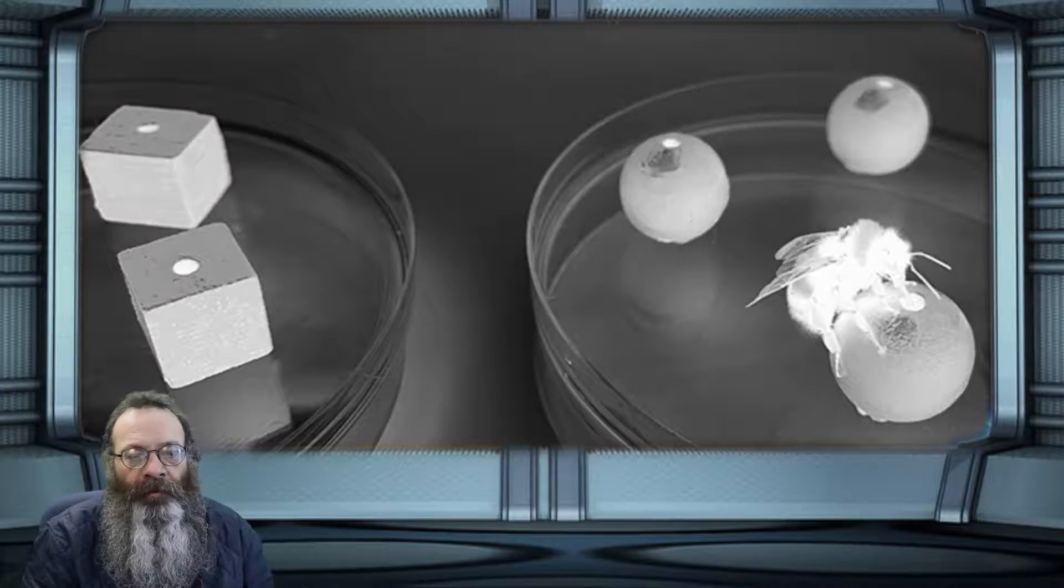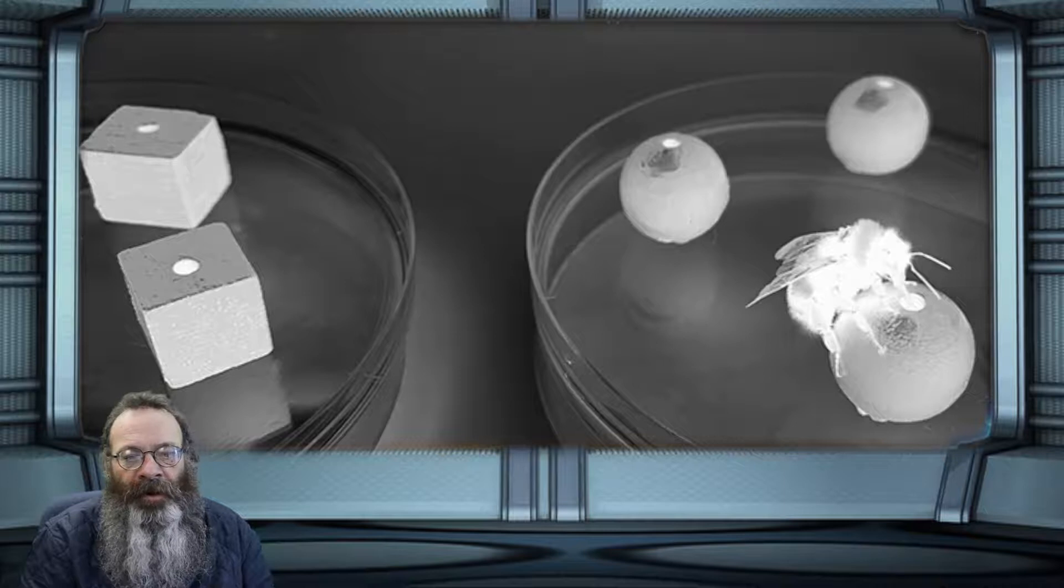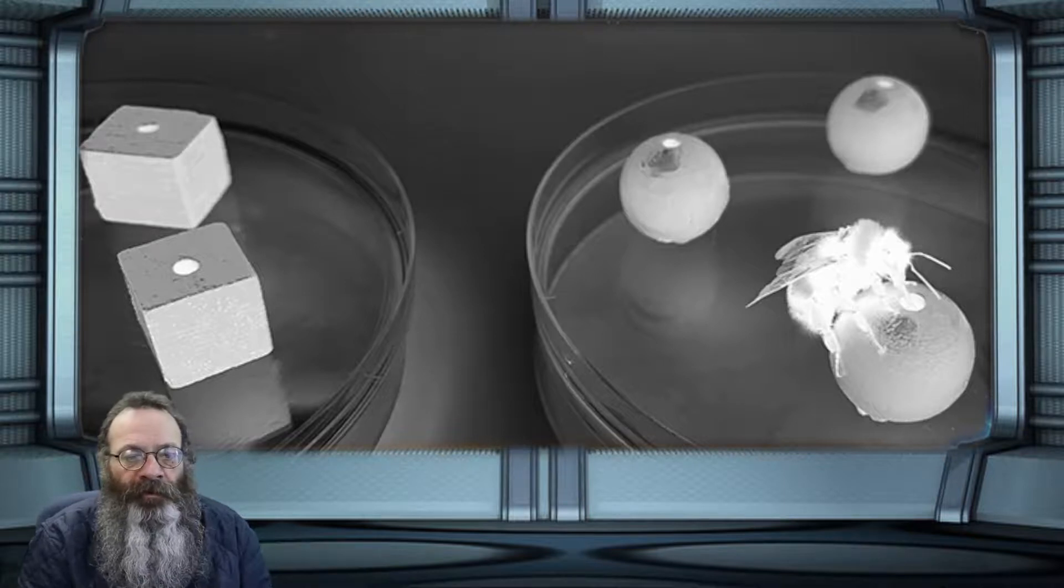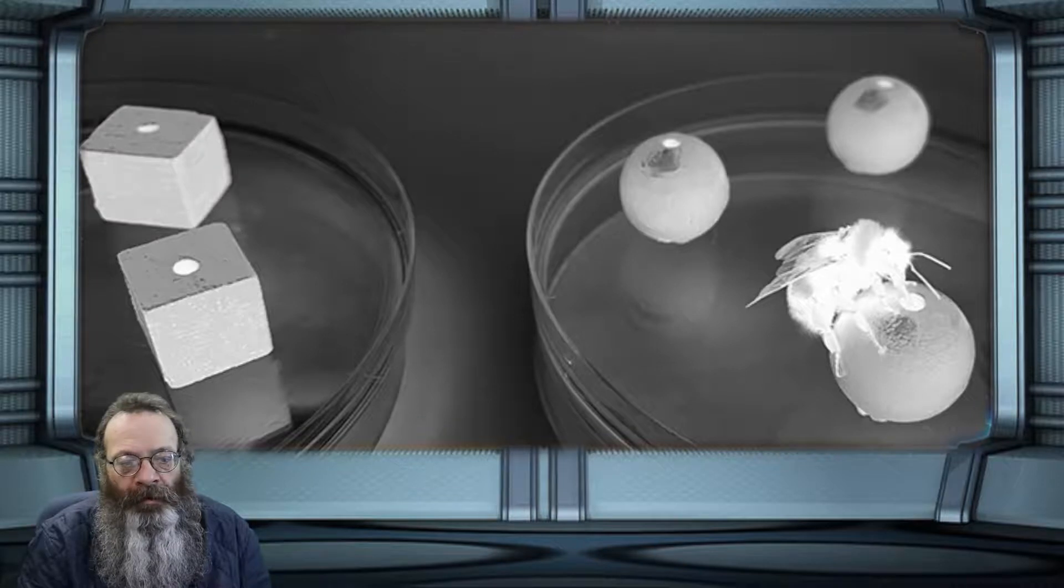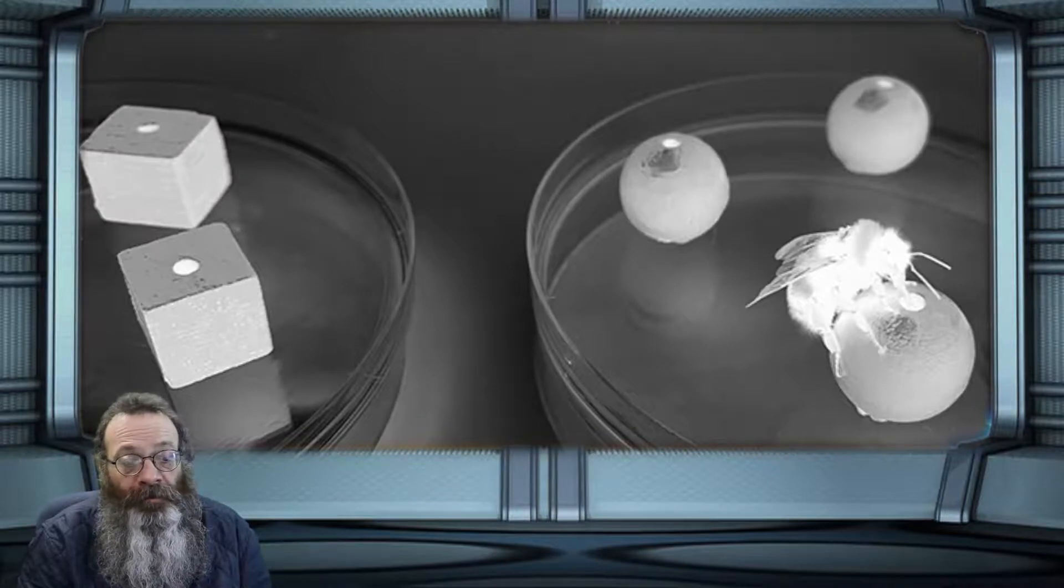It turns out the ability to recognize objects across different senses is present in the tiny brains of an insect. Researchers at Queen Mary University of London and Macquarie University in Sydney have published new work in the journal Science showing that bumblebees can find objects in the dark they've only seen before.